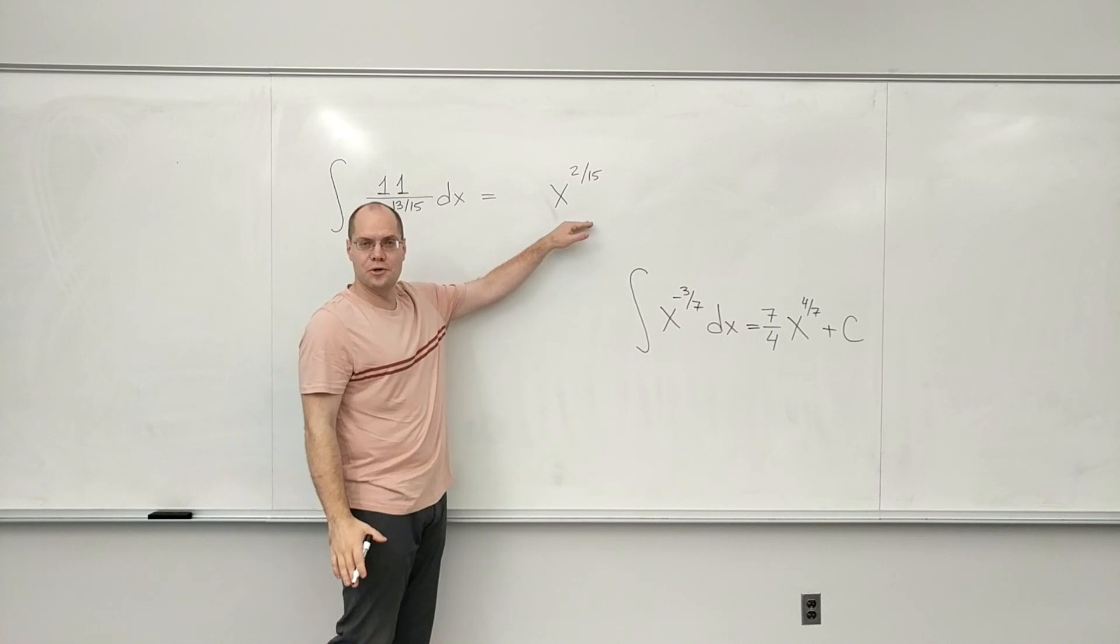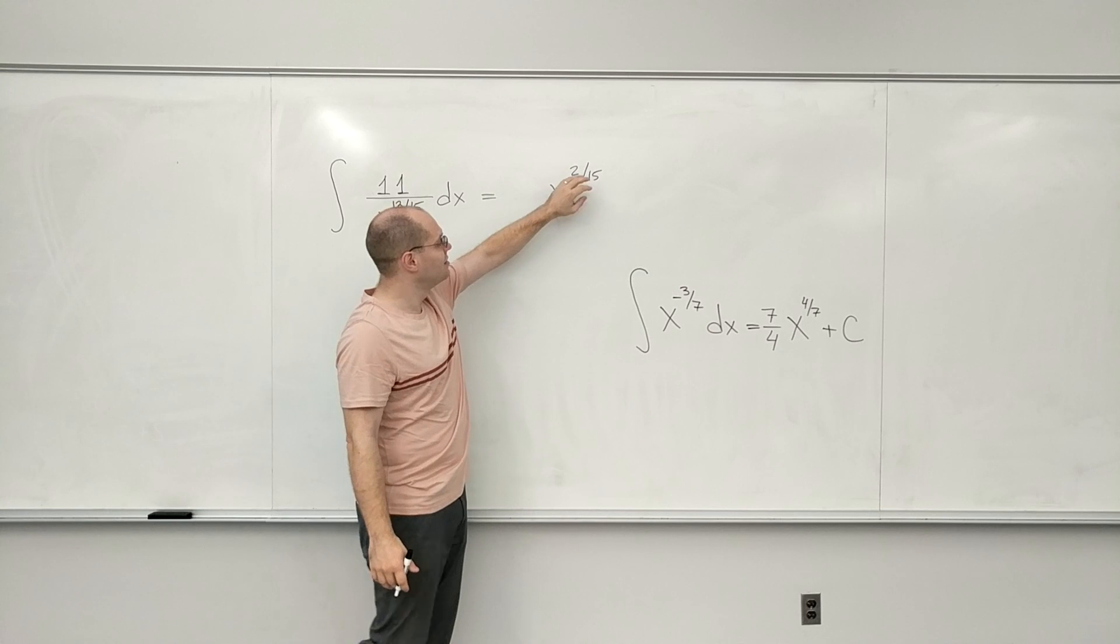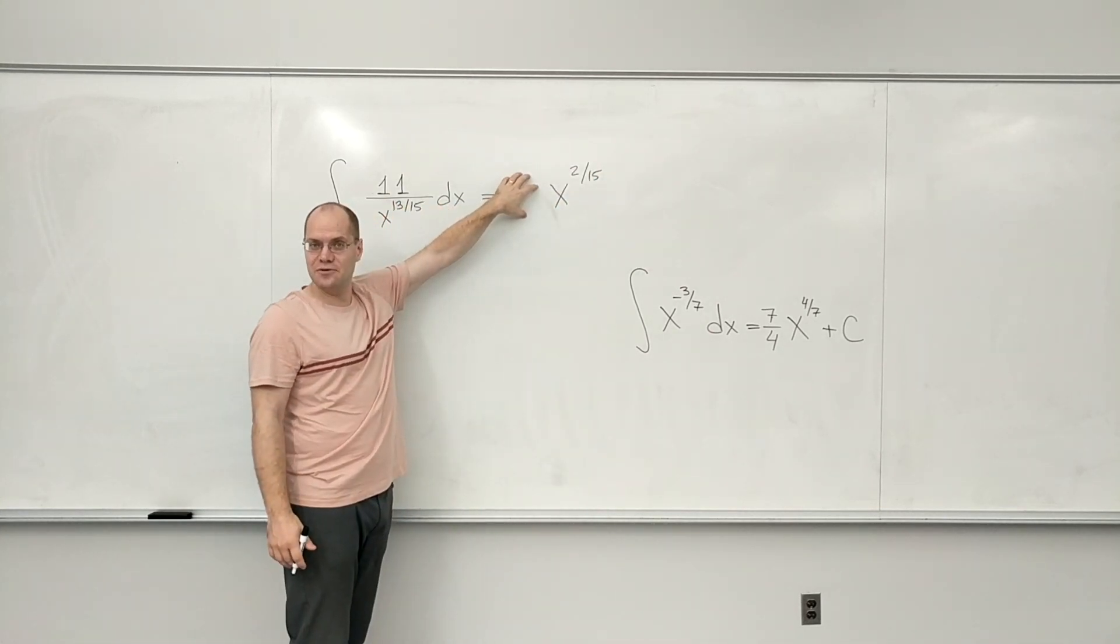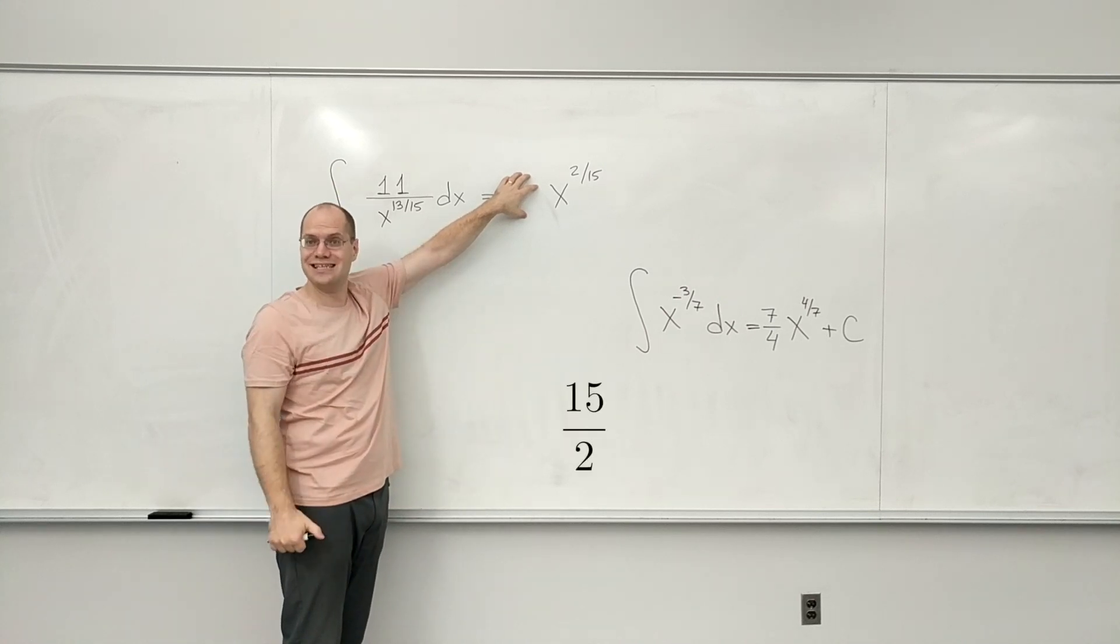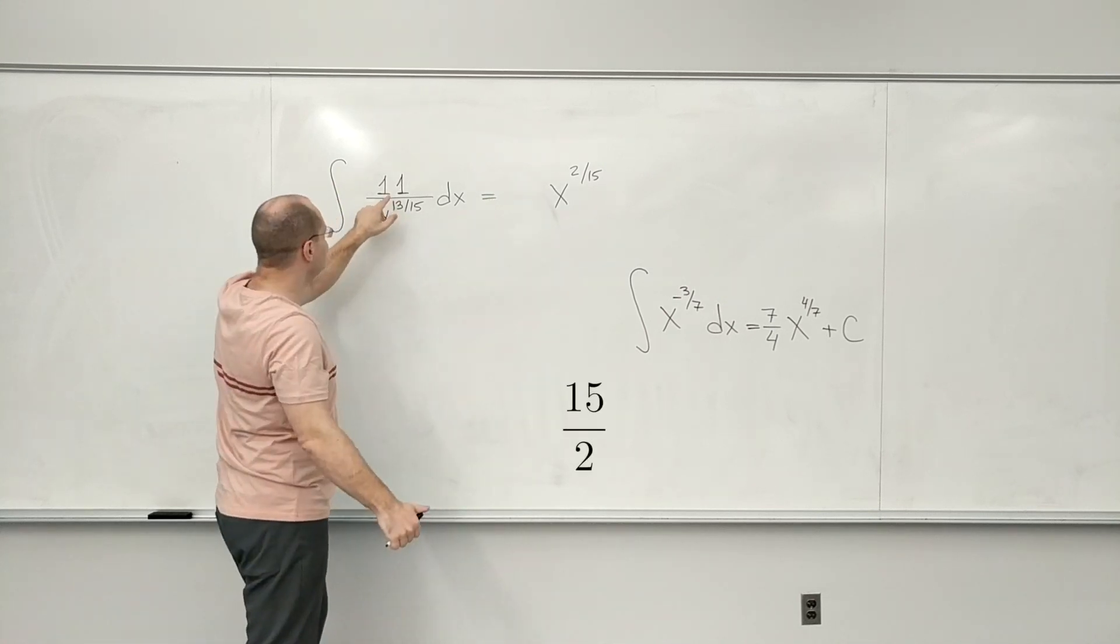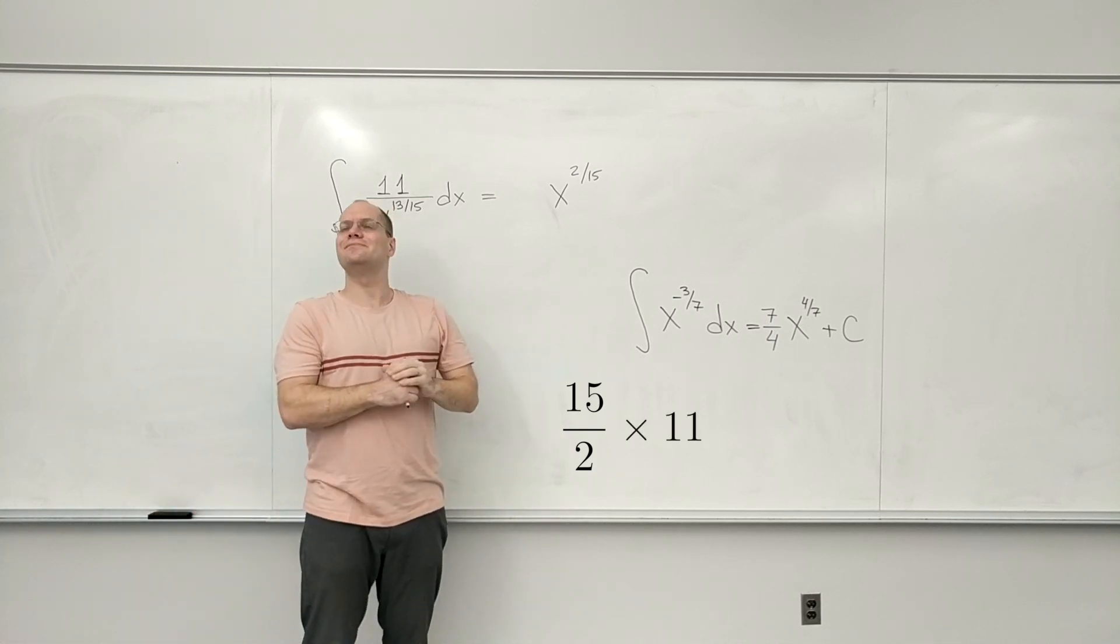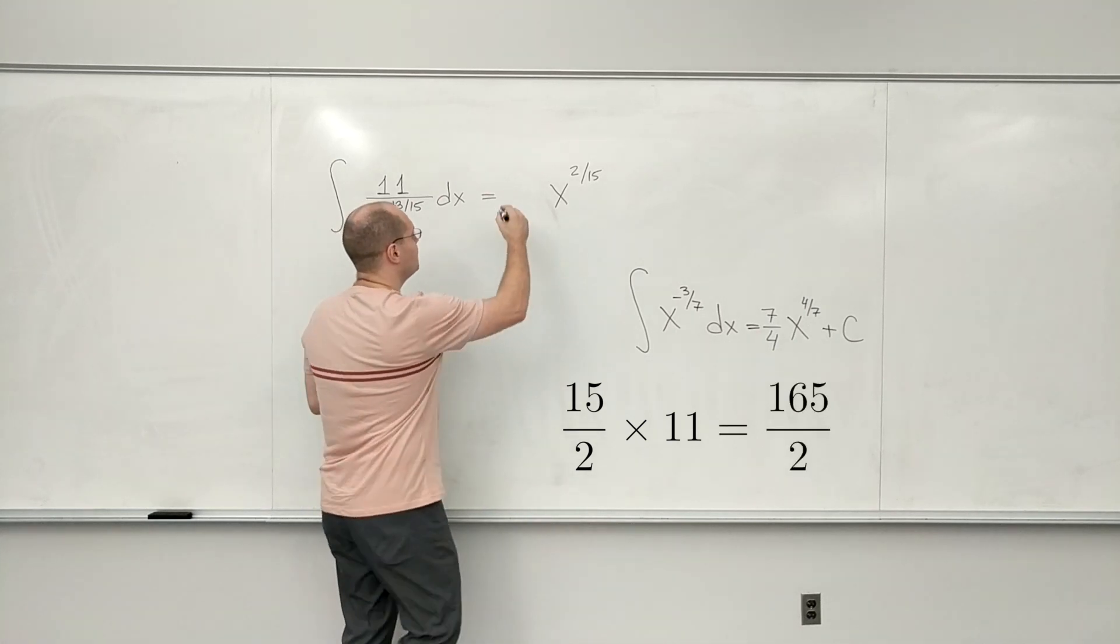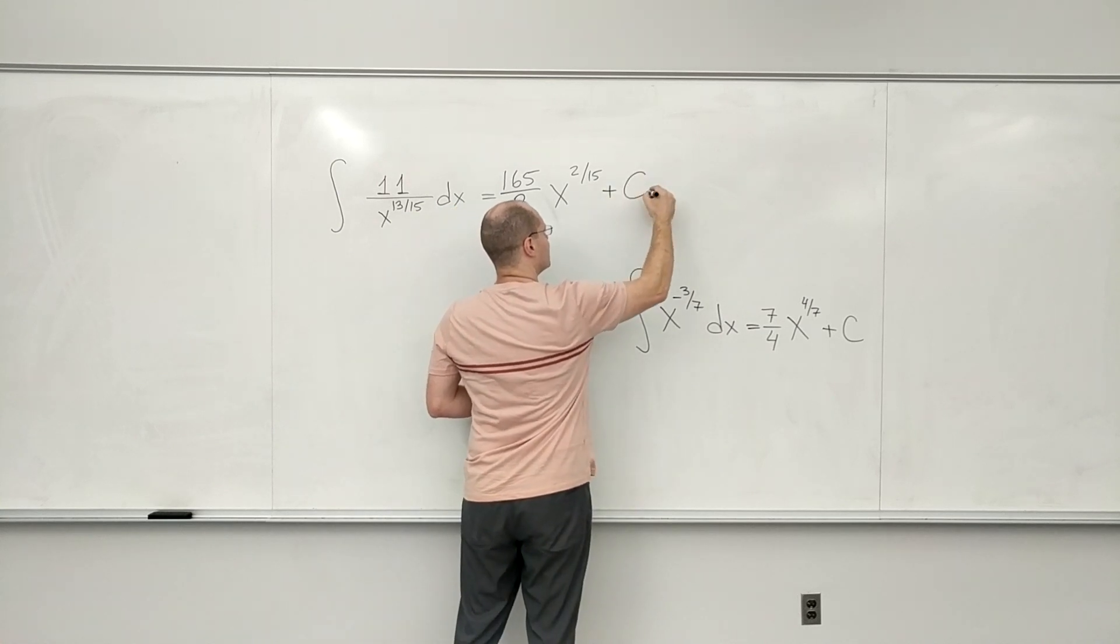I will only worry about the coefficient. So I will now take a mental derivative of this, which tells me that 2/15th will come down, which I don't have, so to make up for it I have to have 15/2. And then times 11. So 15/2 times 11, 165/2, if I'm correct. Plus C.